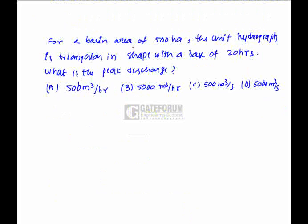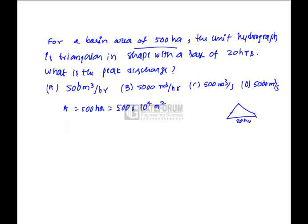Question is, for a basin area of 500 hectares, that is equal to 500 into 10 to the power of 4 square meters, and unit hydrograph is triangular in shape with a base of 20 hours, and the peak discharge we have to find out, QP has to be found out.